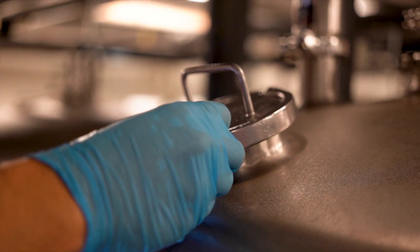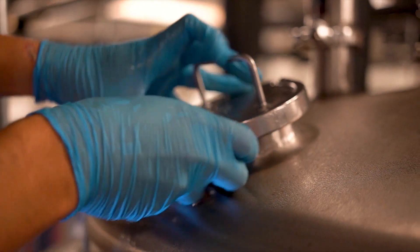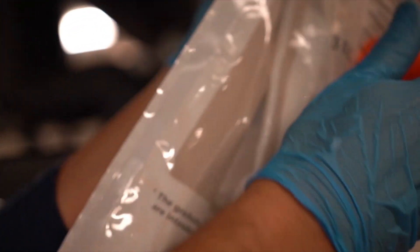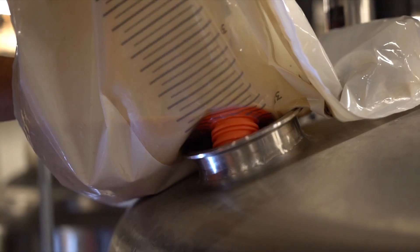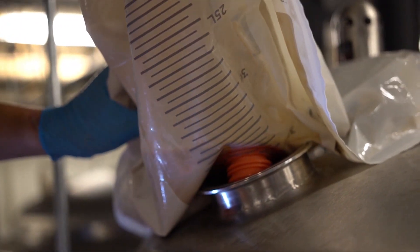Repitching is made easy using the Flexbrink due to its convenient handles and dual ports. Simply sanitize the port, remove the cap, and pour the yeast slurry into the fermenter.